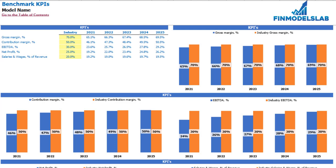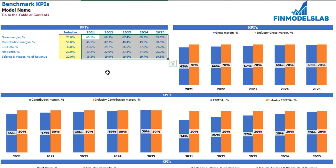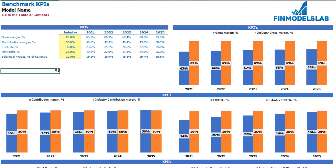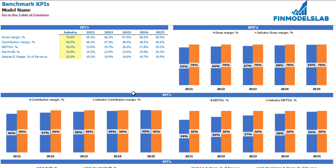On the benchmarks KPI tab you may compare your financial outputs with your industry benchmarks. You have five different benchmarks: gross margin, contribution margin, net profit, EBDA, and salaries and wages as a percentage of revenue. In one set of cells you may see the values produced by the model, and in the yellow cells you can set up your industry benchmarks — for example, a gross margin of 85% for your industry. Below you can see this information in graphical form, with orange columns showing industry benchmarks and blue columns showing model values.